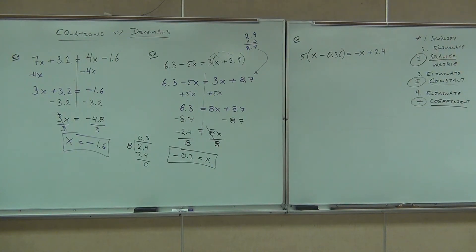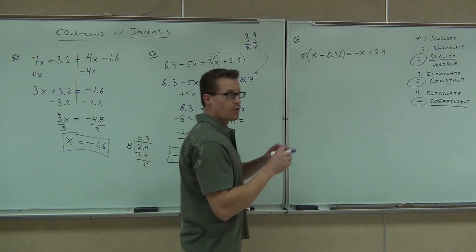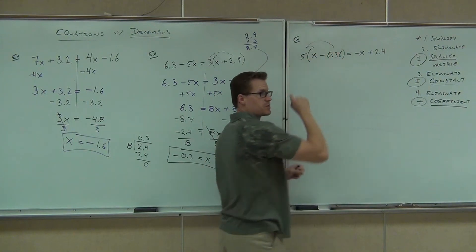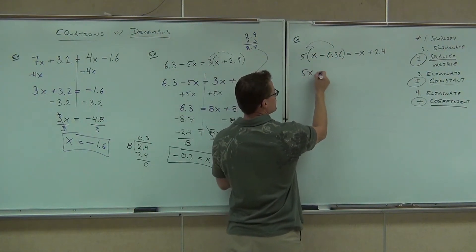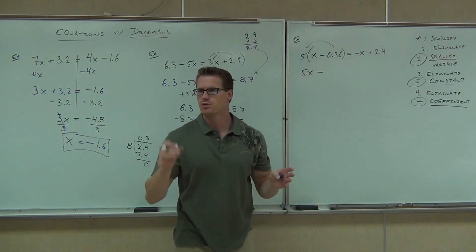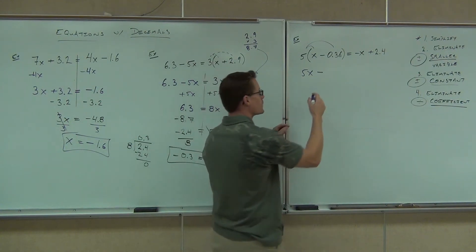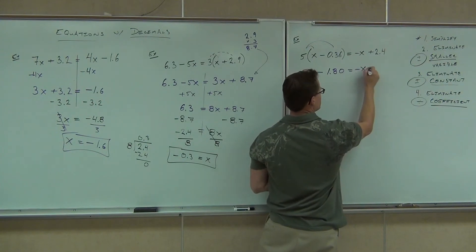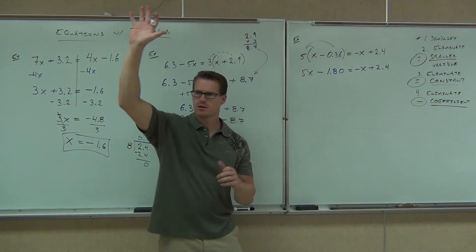I'm going to pause you here for just a second. I want to make sure the first couple of steps are correct. First, hopefully you distributed — you've got to get rid of those parentheses — and you've got 5x minus, and you do 0.36 times 5, move it two decimal places to get 1.8. That equals negative x plus 2.4. Raise your hand if you made it that far. Good — that's a great first step.